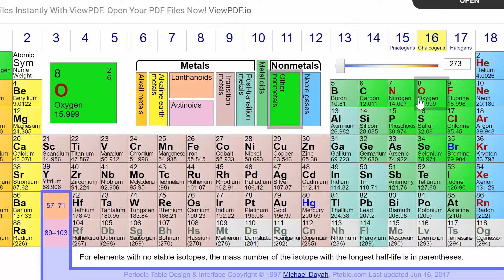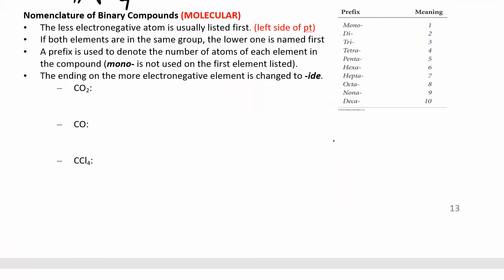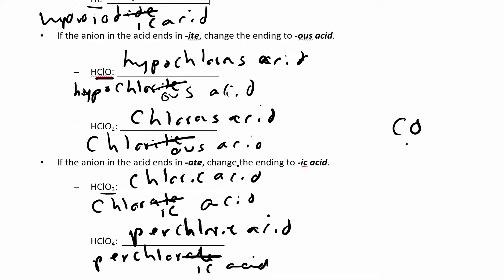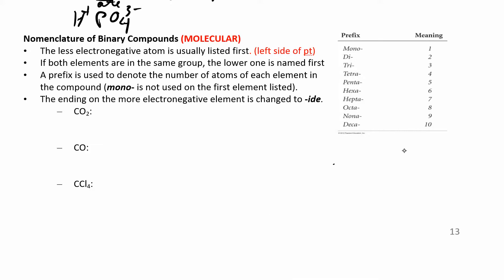The problem with these is they can combine in different amounts. You can have carbon with one oxygen, or carbon with two oxygens. So you have to name them differently, and that's where these prefixes come in. You probably already know carbon monoxide and carbon dioxide — you're using prefixes to tell you how many oxygens you have.